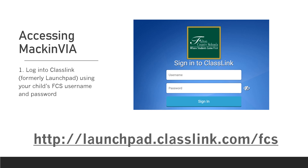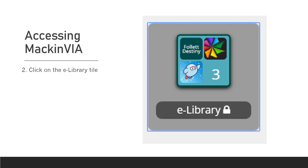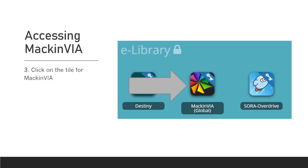First and foremost, we need to access MacInvia. You'll need to log in using your child's FCS username and password. You do need to type in the exact address located at the bottom of this slide. If you try to Google 'launchpad' or 'ClassLink,' it will pull you up to the general login site and you'll need a district code. I don't have access to what the district code is, so you do need to type in the actual address. Once you get logged in, you're going to click on the e-library tile, then click on the tile for MacInvia — it looks like a colorful pinwheel.